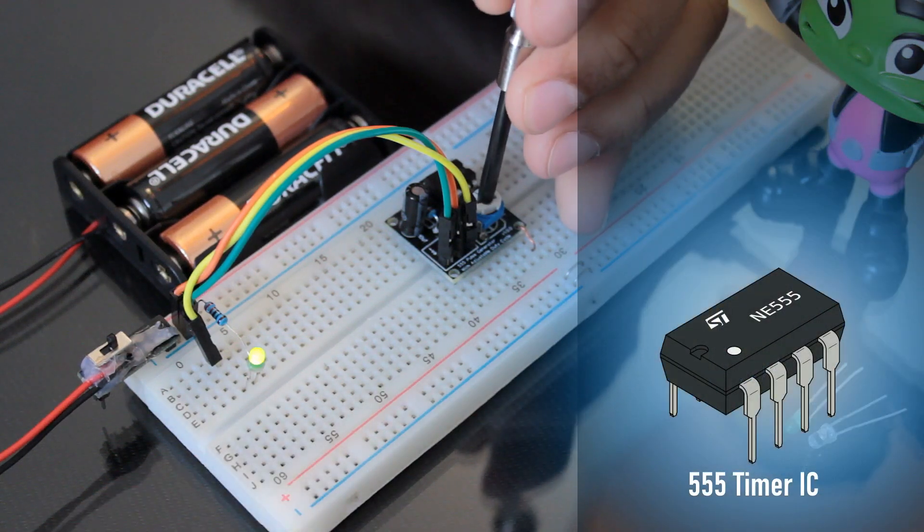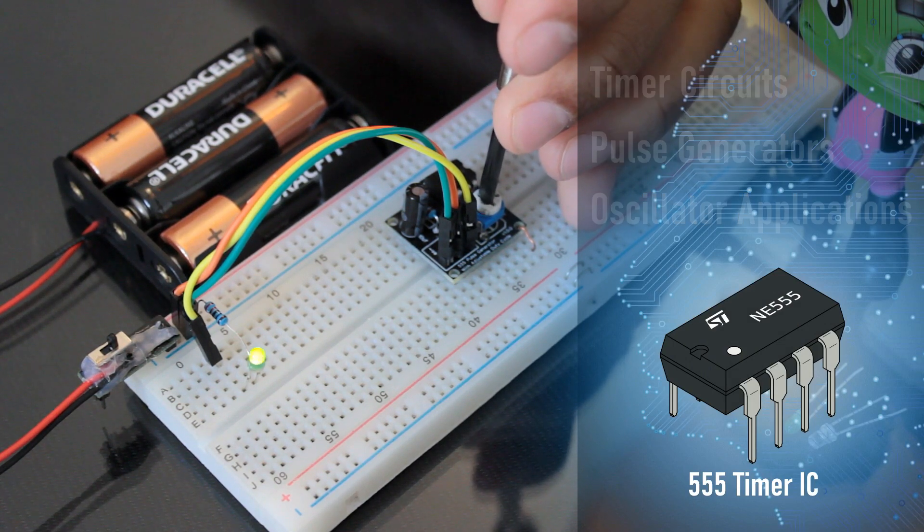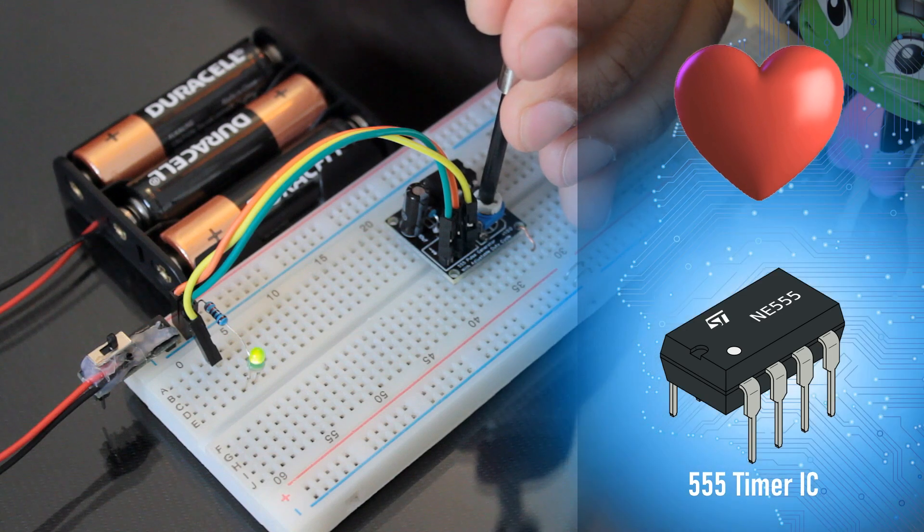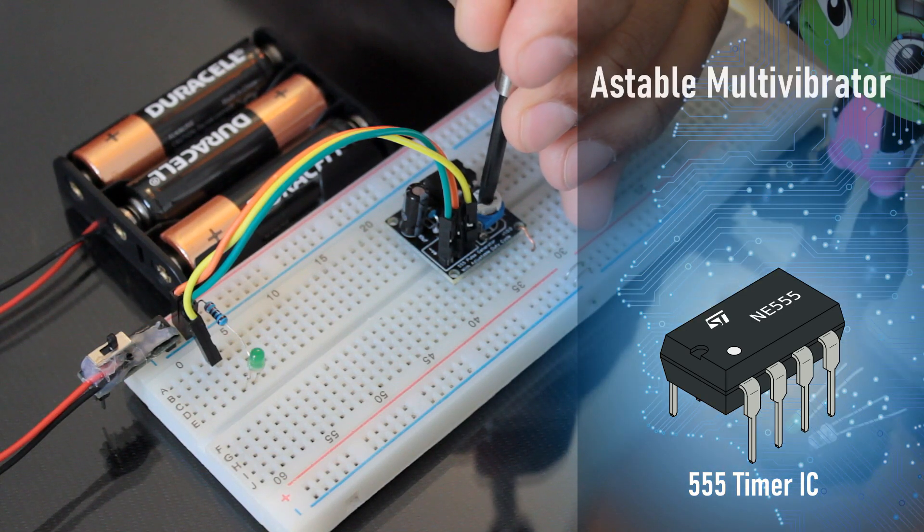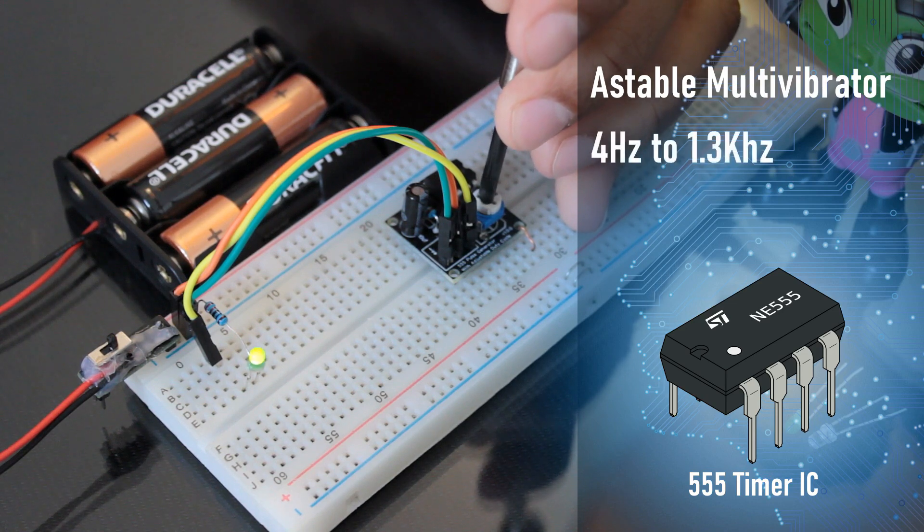The 555 timer IC is an integrated circuit that is used in a variety of timer circuits, pulse generators and oscillator applications. The heart of the module is the 555 timer IC that is wired as an astable multivibrator, generating pulse from about 4 Hz to 1.3 kHz.